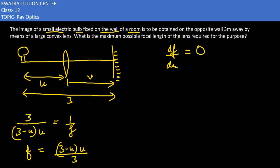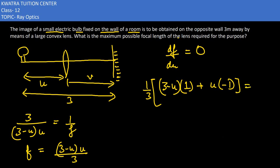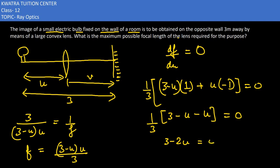Applying the product rule to df/du: we get (1/3) times [(3 minus u) times 1 plus u times (minus 1)] equals zero. This gives (1/3)(3 minus u minus u) equals zero, so 3 minus 2u equals zero, giving u equals 3/2, which is 1.5.